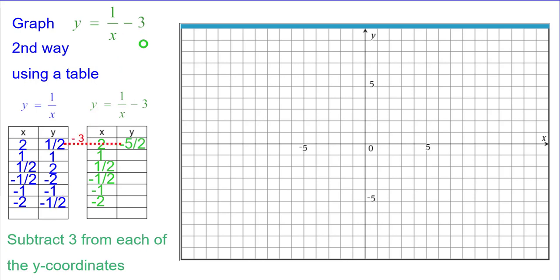So for the first one, a half minus 3, think of that as a half minus 6 halves, which would be negative 5 halves. So that would be right 2 down 2 and a half.